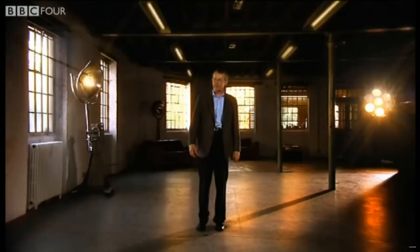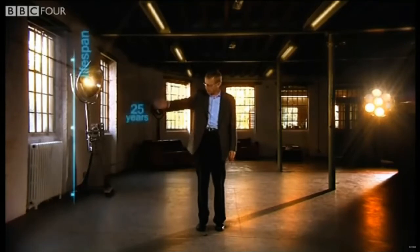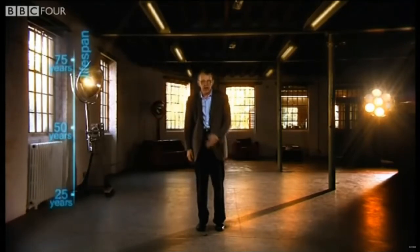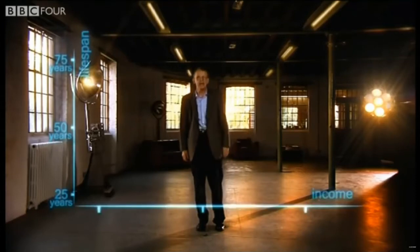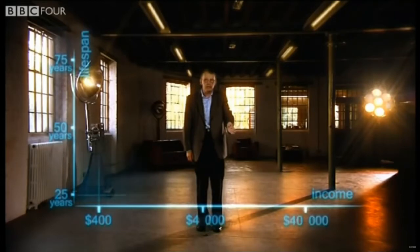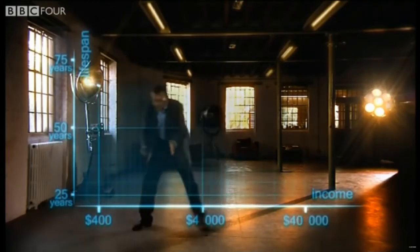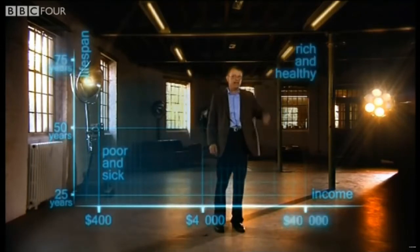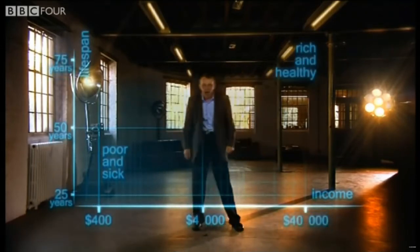First, an axis for health, life expectancy from 25 years to 75 years. And down here, an axis for wealth, income per person, $400, $4,000 and $40,000. So down here is poor and sick, and up here is rich and healthy.